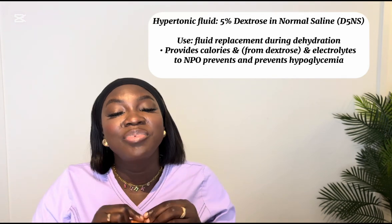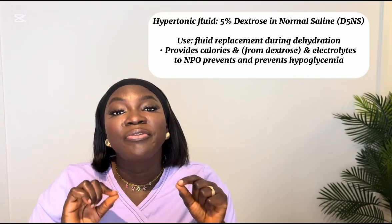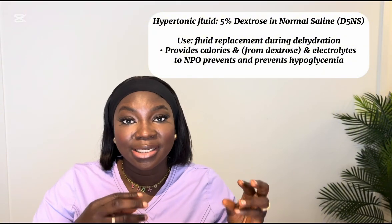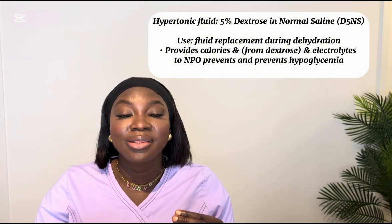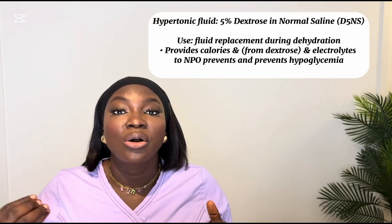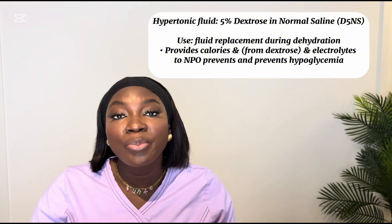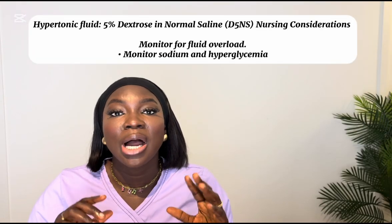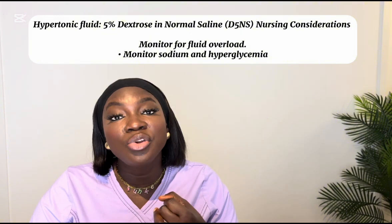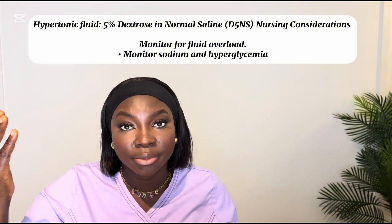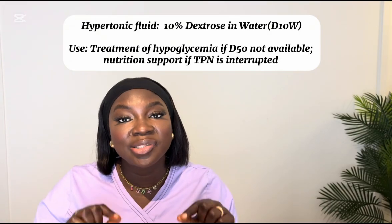The next hypertonic fluid is 5% dextrose in normal saline. It is used for fluid replacement when a patient has dehydration. Since it contains dextrose (sugar) in normal saline, it provides calorie support and electrolytes like sodium to patients on NPO (nothing by mouth) and helps prevent hypoglycemia. Monitor for fluid overload, sodium levels, and signs of hyperglycemia.